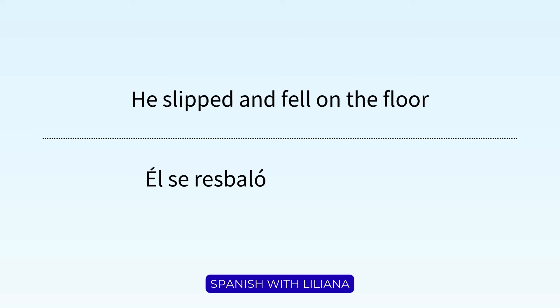How do we say 'he slipped and fell on the floor'? 'He slipped' is 'él se resbaló.' We're using 'se' because he did it himself. 'And fell' is 'y cayó' — we could say 'y se cayó,' but because we already said 'se' at the beginning, we don't need to repeat it. 'On the floor' is 'al suelo.' So: 'Él se resbaló y cayó al suelo.'